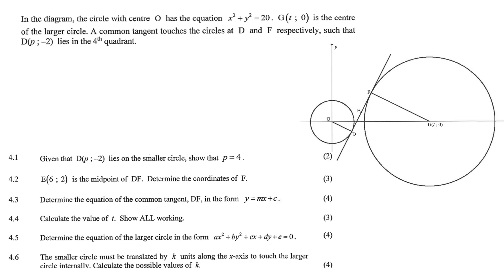In the diagram, the circle with center O has the equation x squared plus y squared equals 20. So that's this one, x squared - no, it's not how you do x squared. x squared plus y squared is 20. Sorry guys, exam nerves.